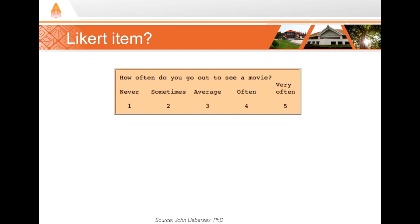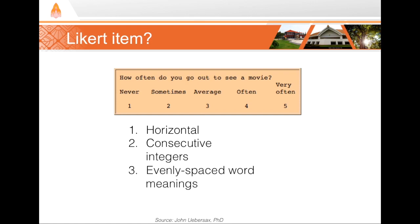How about this one: 'How often do you go out to see a movie?' It's arranged horizontally, the integers are consecutive, the words are pretty evenly spaced in meaning, and 'average' is a neutral middle response. But are the ends opposites? Is 'very often' the opposite of 'never'? Not really — so we're not fully meeting the fourth criteria. This is not a Likert item. However, since it meets criteria one through three, we can call it a Likert-type item and treat it the same analytically, but be careful to refer to it correctly.